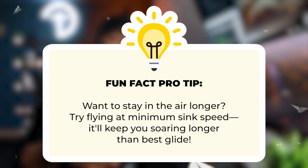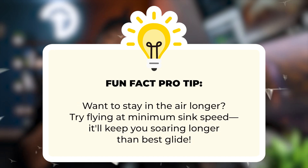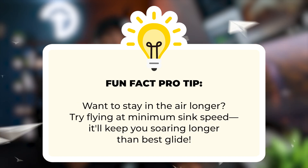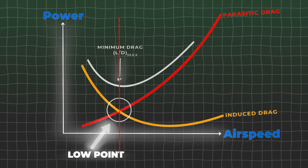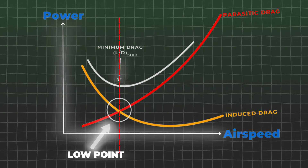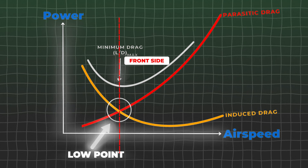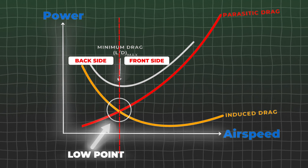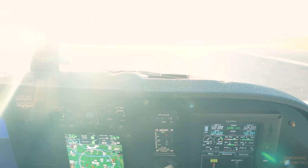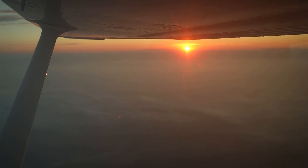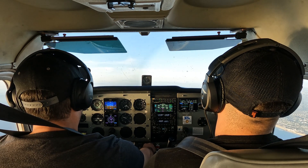A slightly slower speed than best glide is referred to as minimum sink, which will keep you in the air longer than best glide. Now, if we draw a line through the LD max to separate the power curve, we get a front side and a back side. The front side is where command inputs to the throttle and elevator are normal, like in cruise flight — if I add power, I go faster, and if I pull back on the yoke, I climb. They do affect each other slightly, but we're talking about what gives us the most control.